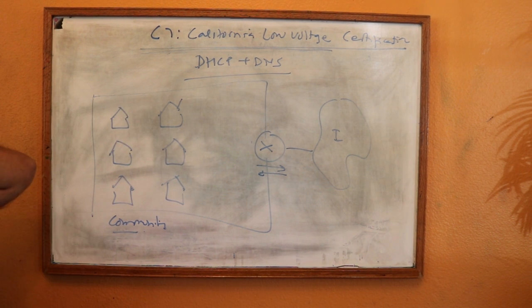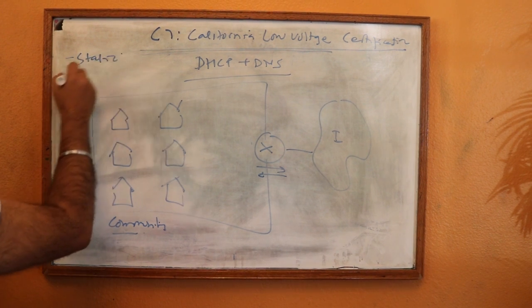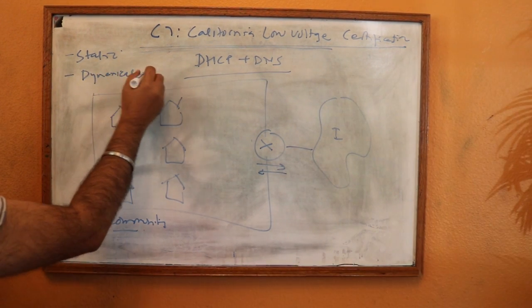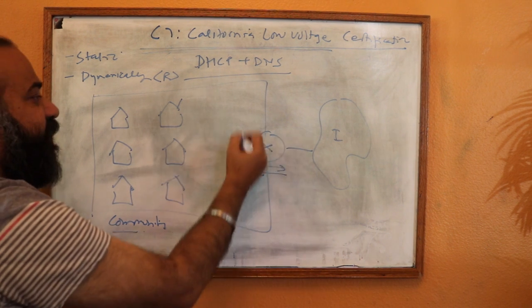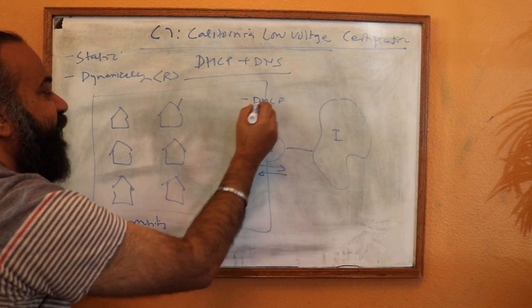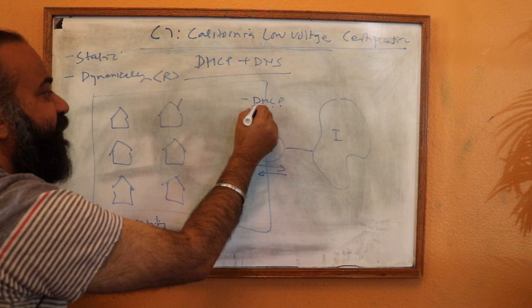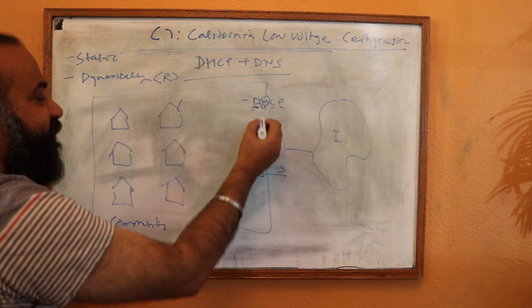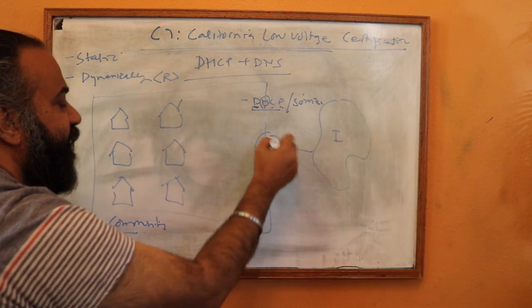Anything which requires an IP address will be allocated one in two ways. One is called static assignment — you go inside the device and configure it manually. Or the address is assigned dynamically, most of the time by a router or gateway. Inside the router there is a configuration for DHCP, which stands for Dynamic Host Configuration Protocol.